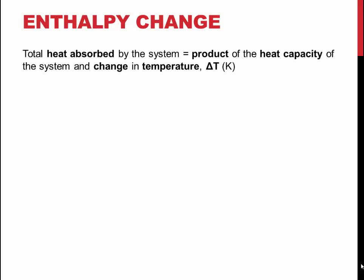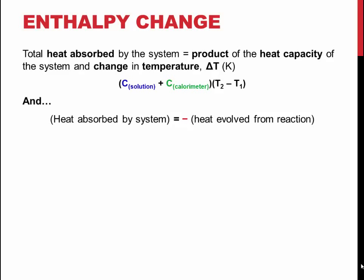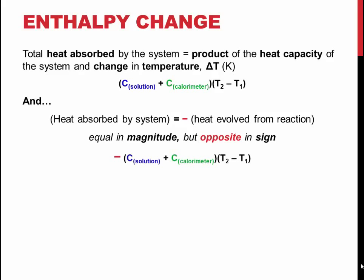Because you know the heat capacity of the solution and the calorimeter, as given in the previous slide and in the lab manual, and the temperature change during the reaction, finding the product gives you the magnitude of heat evolved in the reaction with the opposing sign. Changing the sign gives us the heat produced by the reaction. Enthalpy change is this heat divided by the number of moles of reactant or product used in the experiment, which can be found from the mass of the magnesium.